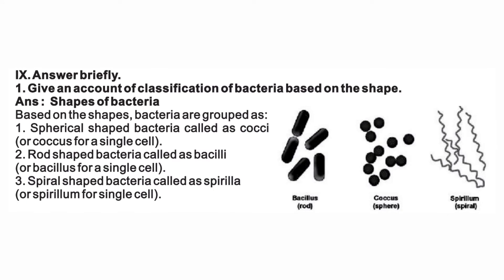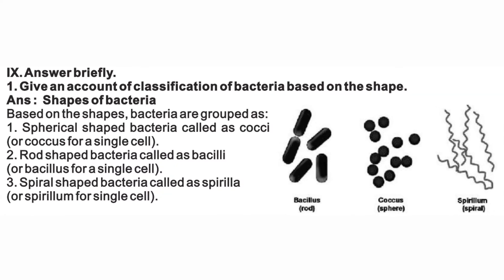Give an account of the classification of bacteria based on shape. Bacteria are grouped as: spherical-shaped bacteria called cocci (coccus for a single cell); rod-shaped bacteria called bacilli (bacillus for a single cell); spiral-shaped bacteria called spirillum (spirillum for a single cell).